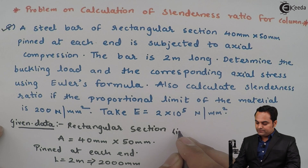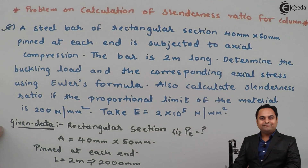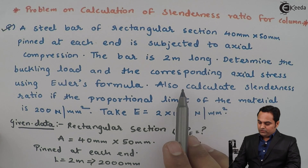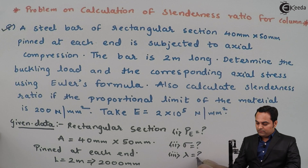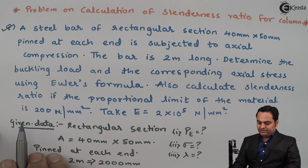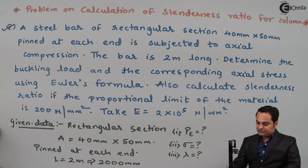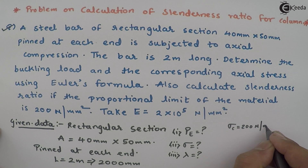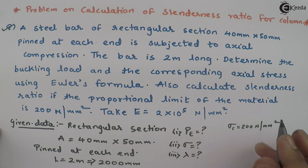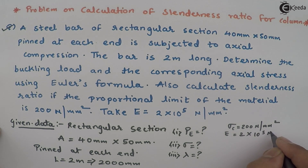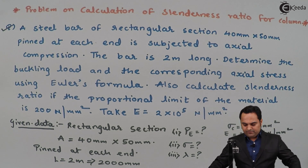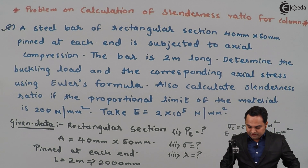We also need to calculate the slenderness ratio, denoted by lambda. The proportional limit of the material is 200 Newton per mm², which is the compressive stress given. Young's modulus is 2×10⁵ Newton per mm², which is the value for steel.